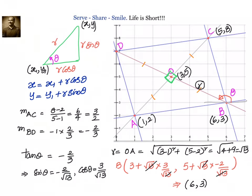Now that we know B is (6, 3), we can easily use the midpoint theorem to find D. The other coordinates come out to (0, 7). Looking at the graph, we can confirm we got (0, 7) and (6, 3) as the correct remaining vertices of this square.